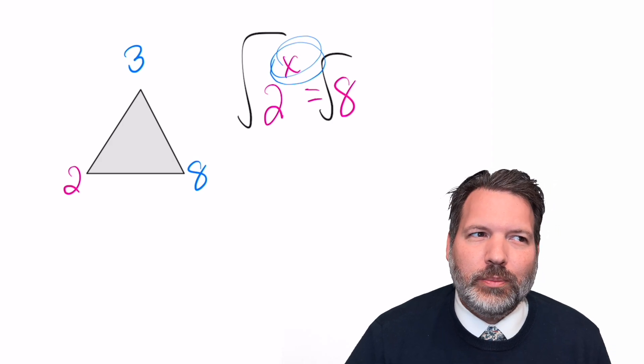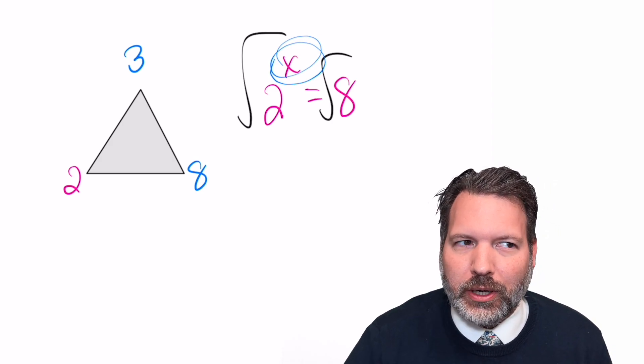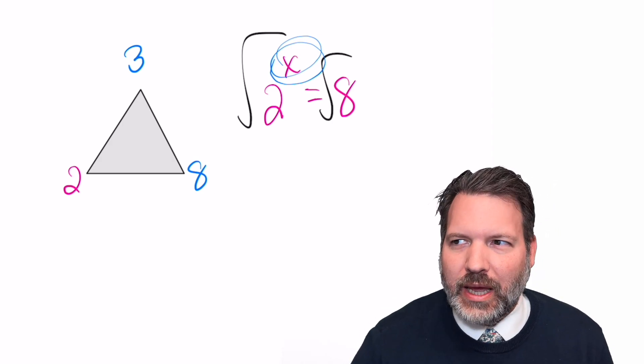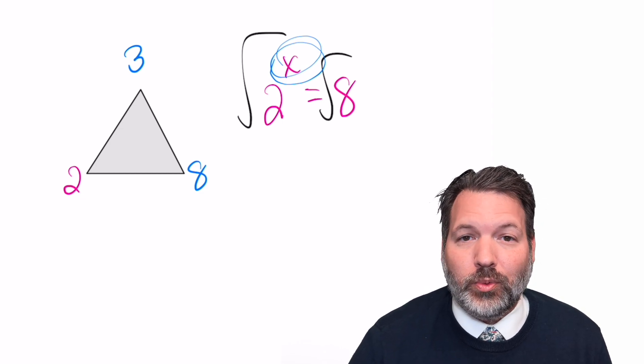But in this case, precisely because the missing piece of information is the exponent, we don't know what kind of root to take. Do I take a square root? Do I take a cube root? What do I do?